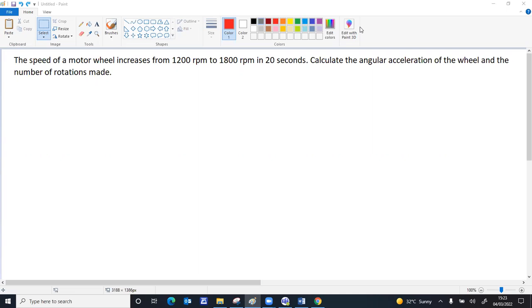rpm is not a standard unit, you need to convert rpm into radian per second. 1 rpm is 2π by 60 radian per second. The first question is asking to calculate the angular acceleration, and the second part asks how many rotations are made in this 20 seconds.